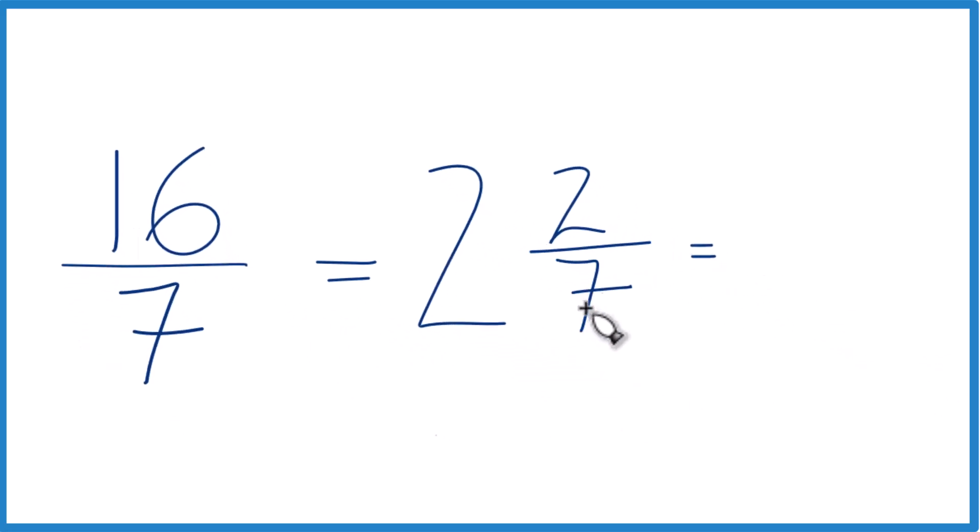2 times 7 is 14, 14 plus 2, that's 16. And then we just bring the denominator across, and you can see that's what we started with, so we did it correctly.